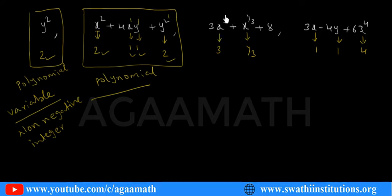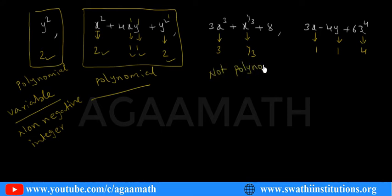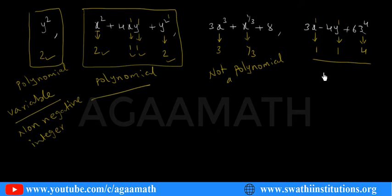Now for 3x cubed plus x to the power 1/3 plus 8: the power of x cubed is 3, which is a non-negative integer, but the power 1/3 is not an integer. Since one of the powers is not an integer, this expression is not a polynomial. For 3x minus 4y plus 6z to the power 4, the powers are 1, 1, and 4 — all non-negative integers — so this is a polynomial.